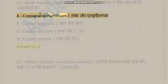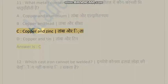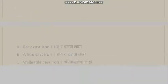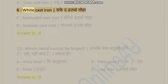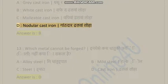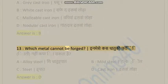Question 11: What metals are contained in brass alloy? A) Copper and aluminium, B) Copper and lead, C) Copper and zinc, D) Copper and tin. Answer is C. Question 12: Which type of cast iron cannot be welded? A) Gray cast iron, B) White cast iron, C) Malleable cast iron, D) Nodular cast iron. Answer is B.